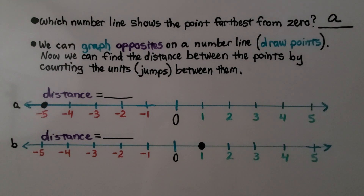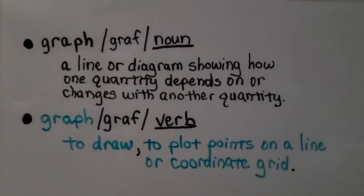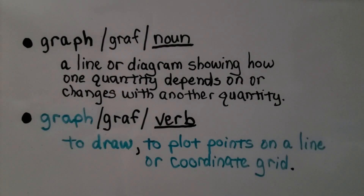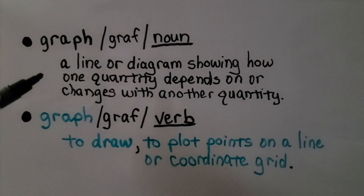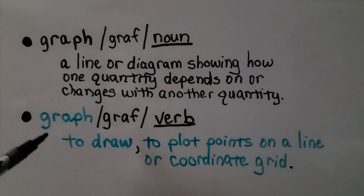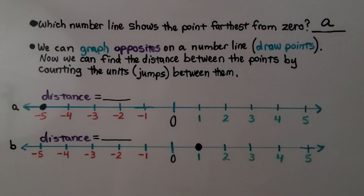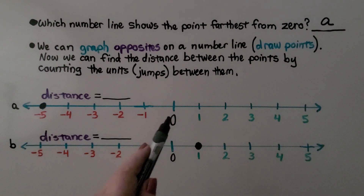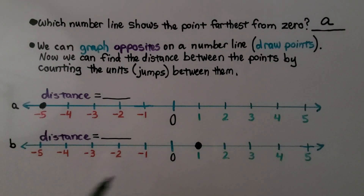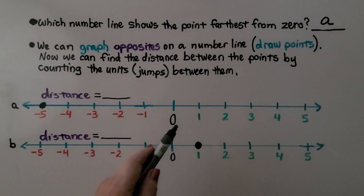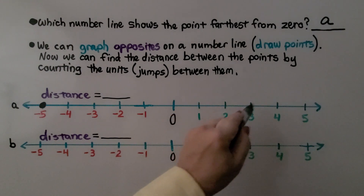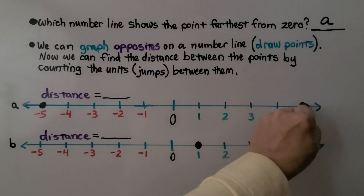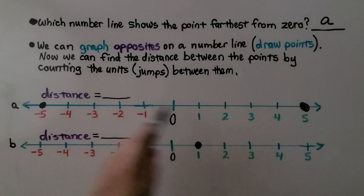We can graph opposites on a number line — that means draw points. We can use the word graph as a noun, meaning a line or diagram showing how one quantity depends on another, or as a verb meaning to draw or plot points on a line or coordinate grid. The opposite of negative five: it's five jumps from zero, so we go to the other side and count five jumps — it's positive five. The opposite of negative five is positive five.